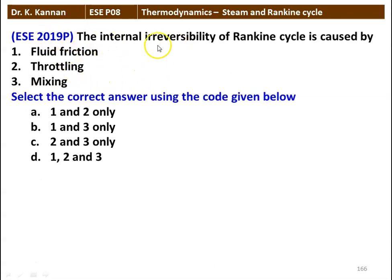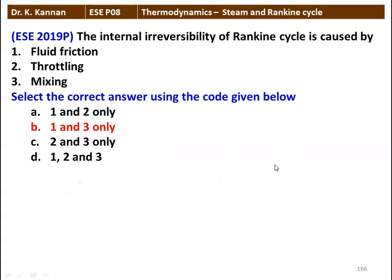Next question: the internal irreversibility of a Rankine cycle is caused by: 1. fluid friction, 2. throttling, 3. mixing. Select the correct answer: 1 and 2, 1 and 3, 2 and 3, or 1, 2, 3. The correct answer is 1 and 3. Fluid friction and mixing are the reasons for internal irreversibility of a Rankine cycle.